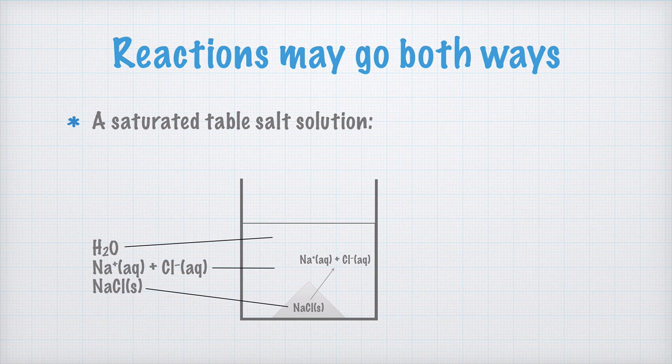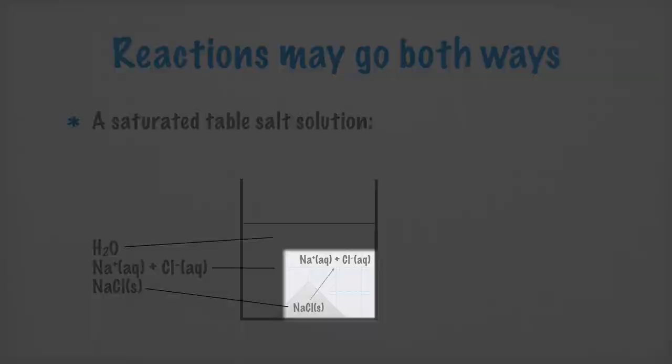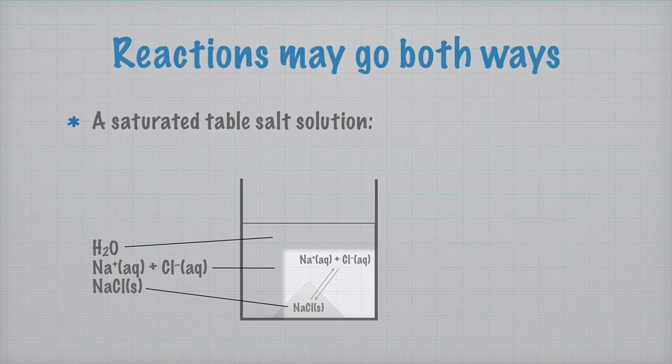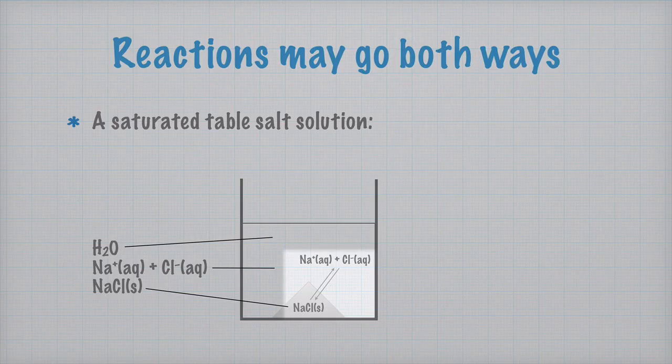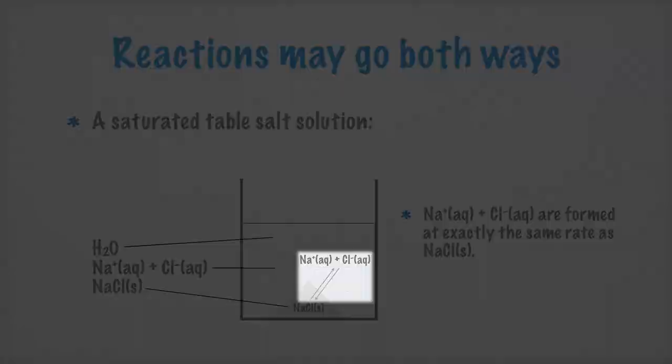But at exactly the same rate that aqueous sodium and chloride ions form, other sodium and chloride ions join and form solid sodium chloride again. Let's write that down too. Aqueous sodium ions and aqueous chloride ions are formed at exactly the same rate as solid sodium chloride.